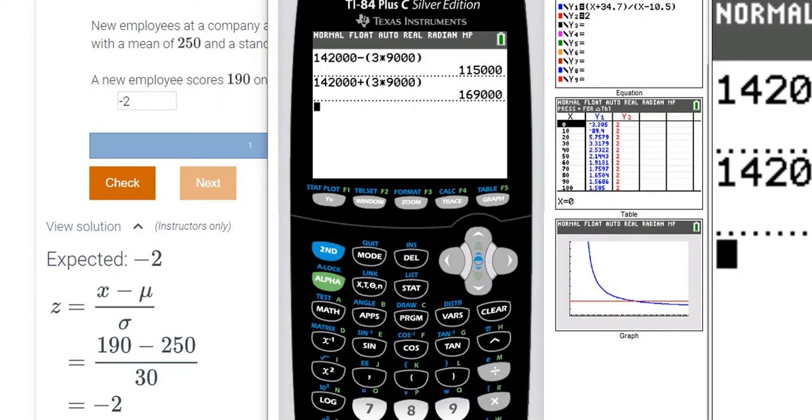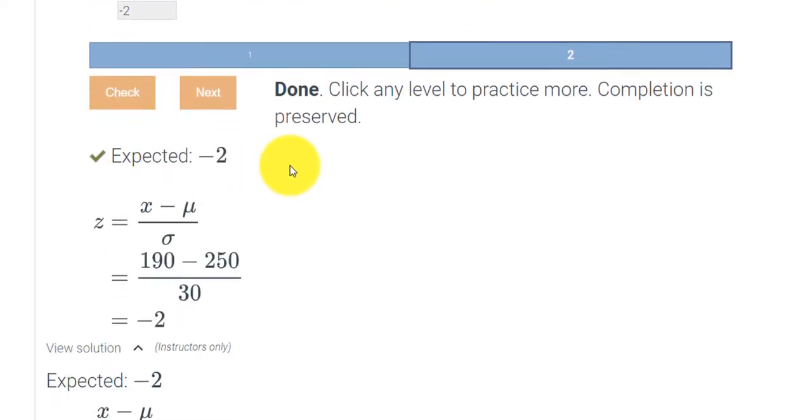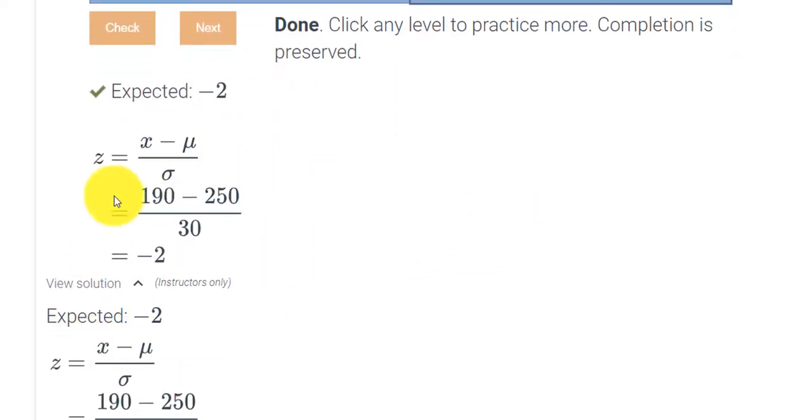Just to make sure I'm not crazy, 190 minus the 250 divided by 30. And we get negative 2. So I put in negative 2, I hit check, and it says done. This is our answer.